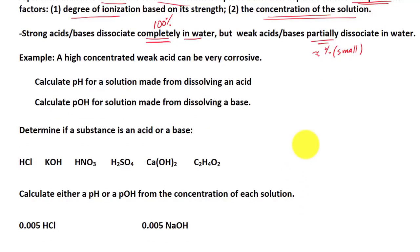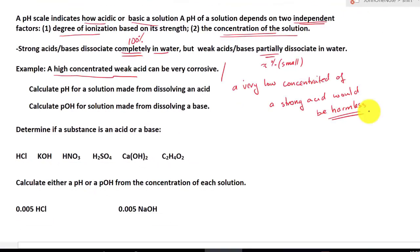If you have a highly concentrated weak acid solution, it can be very corrosive. But if you have a very diluted or very low concentration of a strong acid, it will still be very harmless. To review: calculate pH from a solution made from dissolving an acid, and calculate pOH for a solution made from dissolving a base.